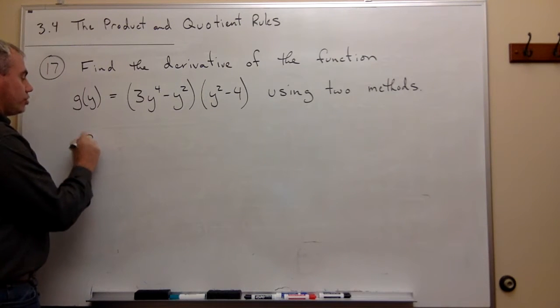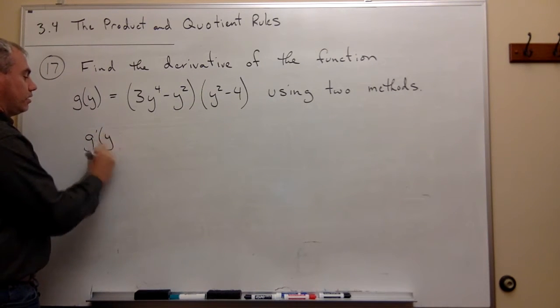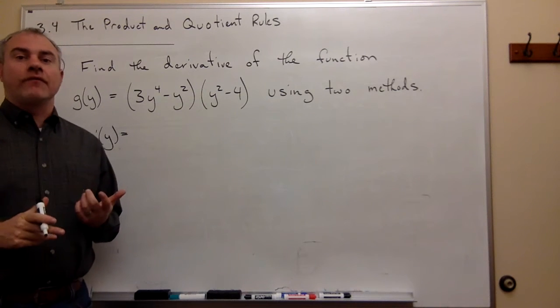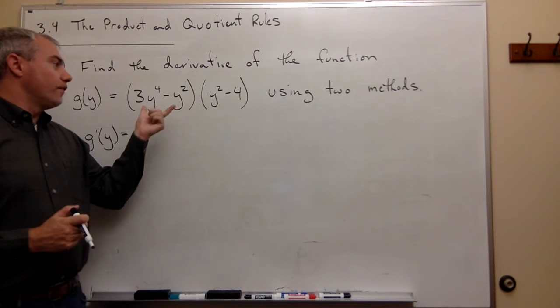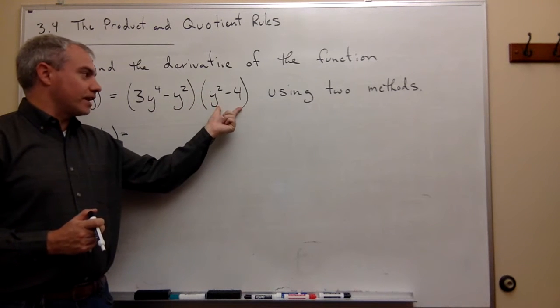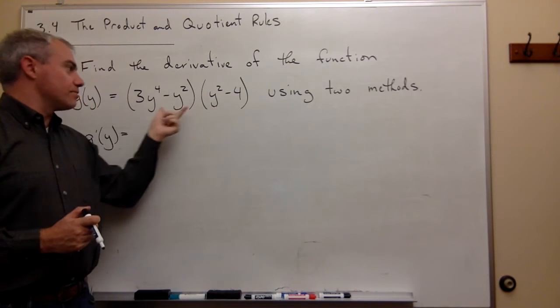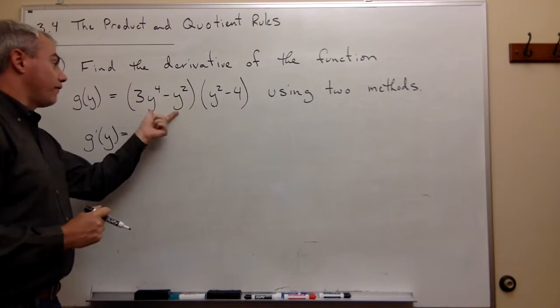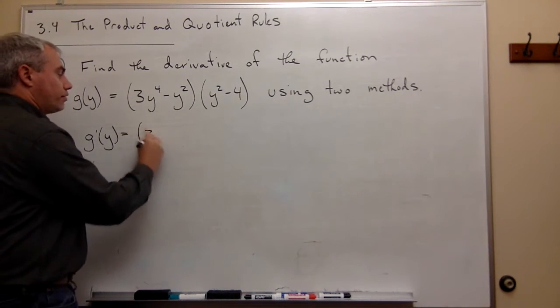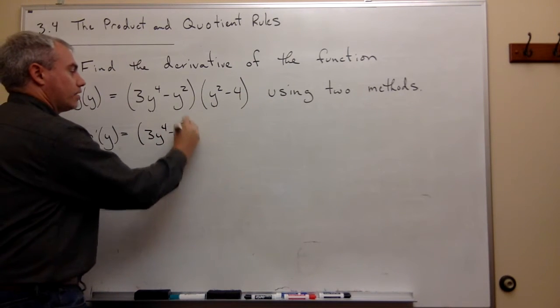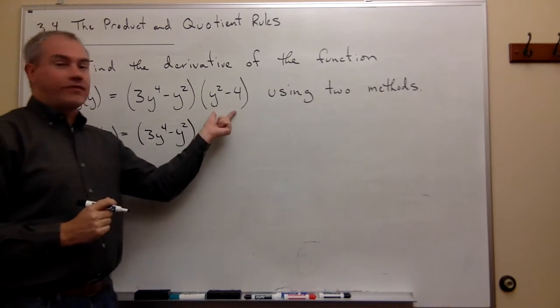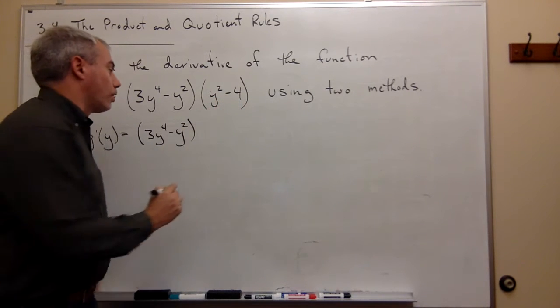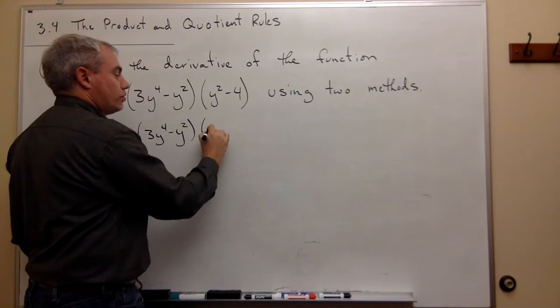And so I'll write g'(y) is equal to, and now we should be getting comfortable with the fact that the product rule says it's the first times the derivative of the second plus the second times the derivative of the first. Okay, so let's do that. It's the first guy left alone, (3y^4 - y^2) times the derivative of this second function. Now the derivative of y^2 - 4 is 2y.